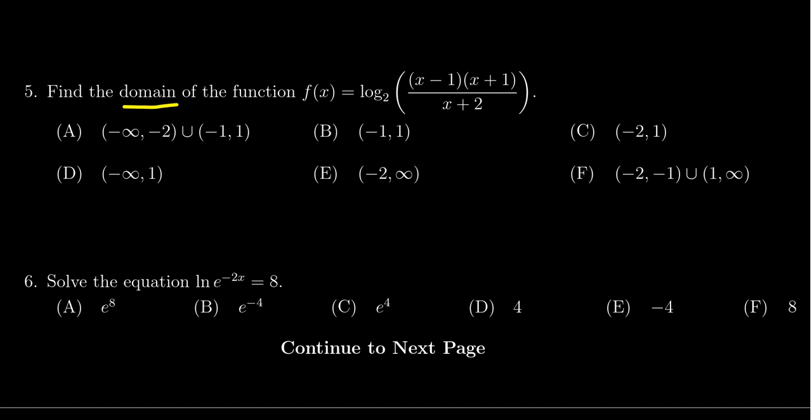Now, when it comes to finding the domain of a logarithmic function, that really just means that the operand, the expression inside of the logarithm, has to be positive. It can't equal zero because the log of zero is undefined. That corresponds with the vertical asymptote of the logarithmic graph. This thing has to be greater than zero, so we have to solve this rational inequality.